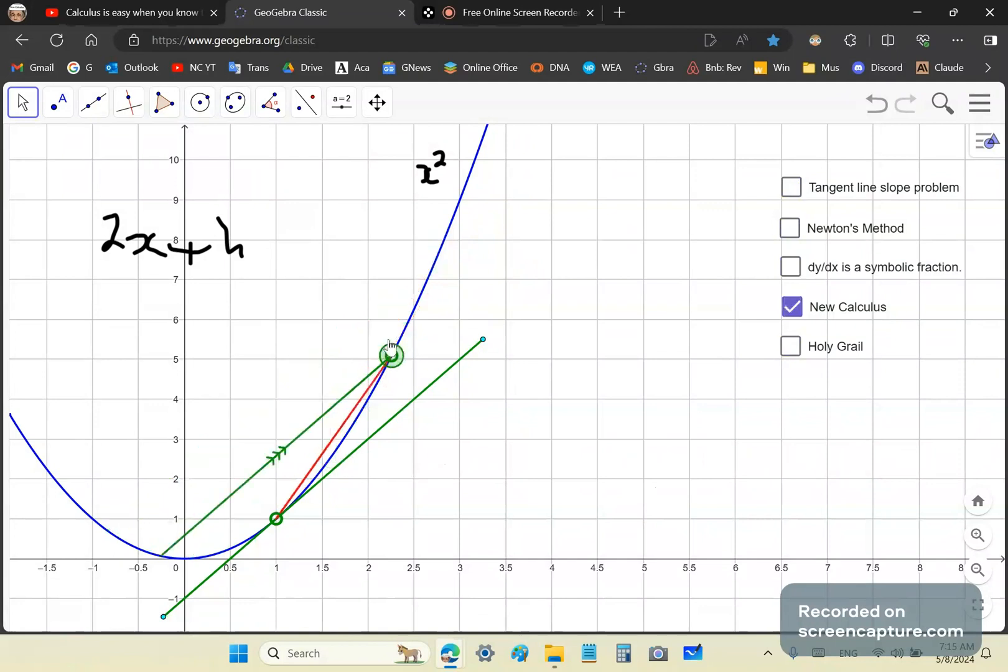But the new calculus sorts out the problem with the parallel secant line, which means the slope of the tangent line is always there and nothing approaches anything. By the way, can you see that? All those parallel secant lines have been there since eternity and they shall continue to be there.